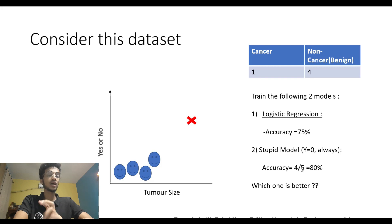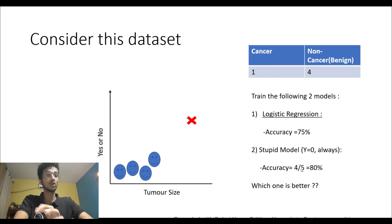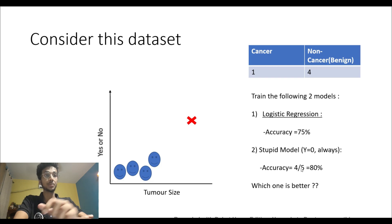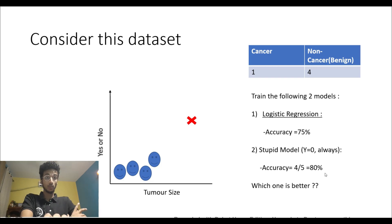Similarly, if you had a hundred examples and 99 were by default non-cancerous, then even a stupid model would be able to get an accuracy of 99%. That is a big problem — we cannot trust the accuracy because it's largely dependent on what kind of dataset you are using.